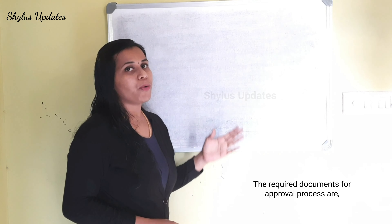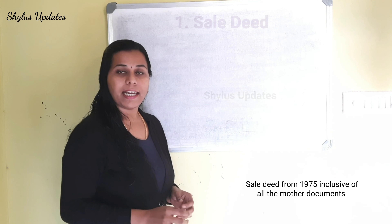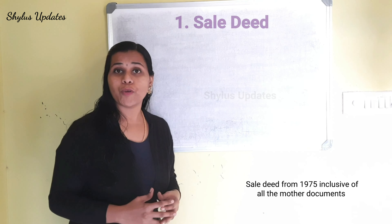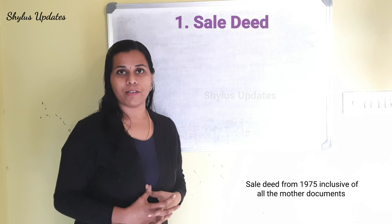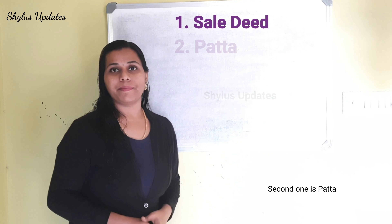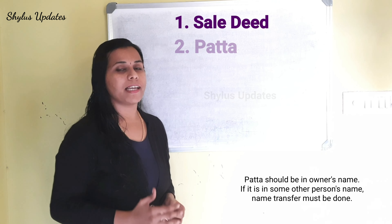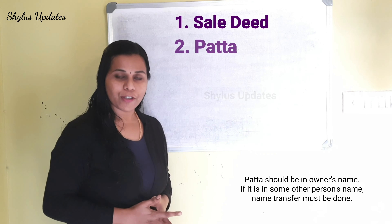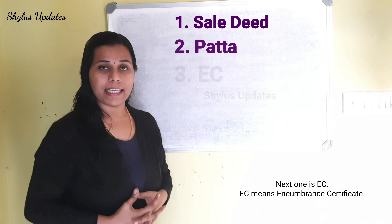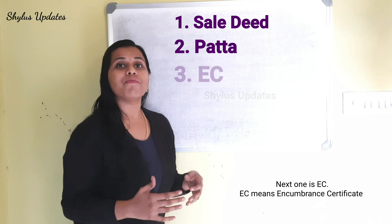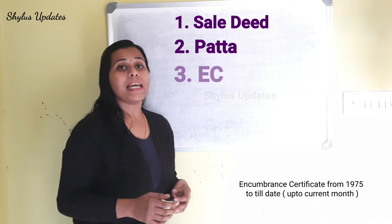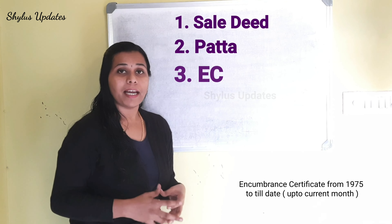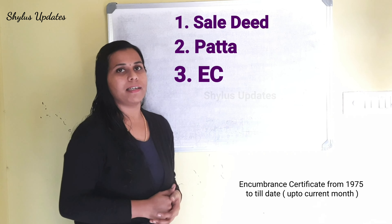The required documents for the approval process are: Sale deed — sale deed from 1975, which includes all the mother documents. Second is patta, which should be in the owner's name. If it is in some other person's name, a name transfer should be done. Next is EC, which means Encumbrance Certificate. The Encumbrance Certificate from 1975 till date, that is up to the current month, is needed.